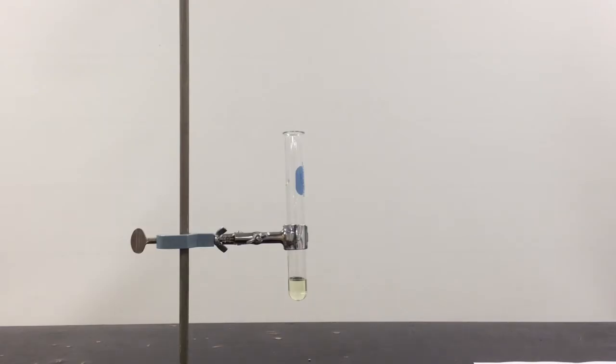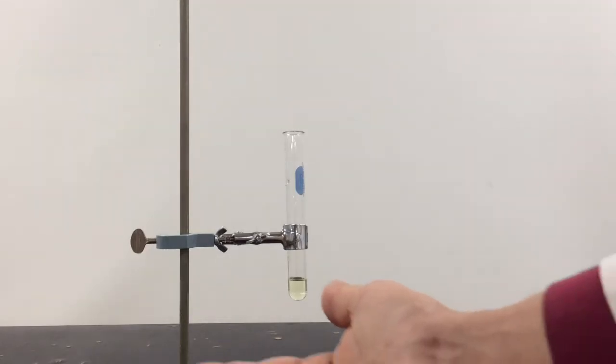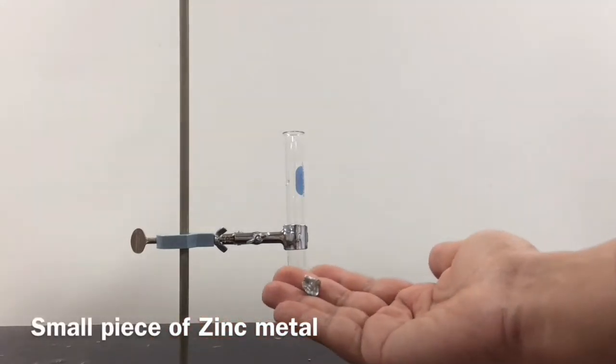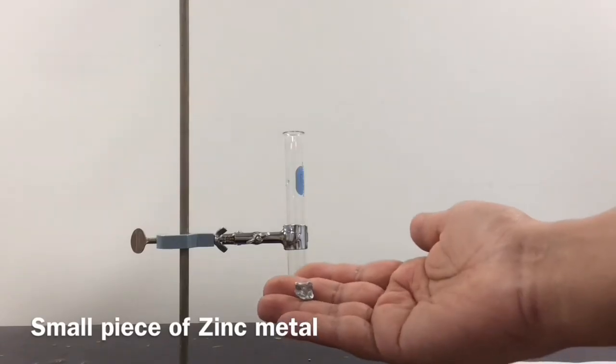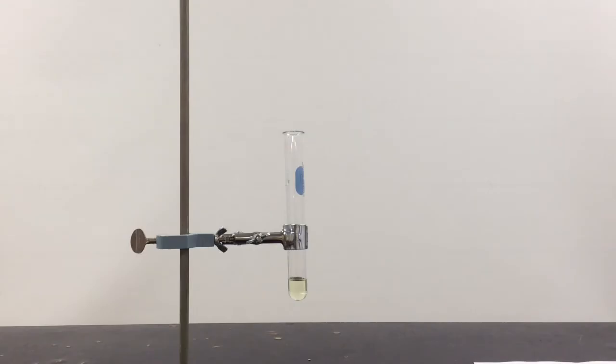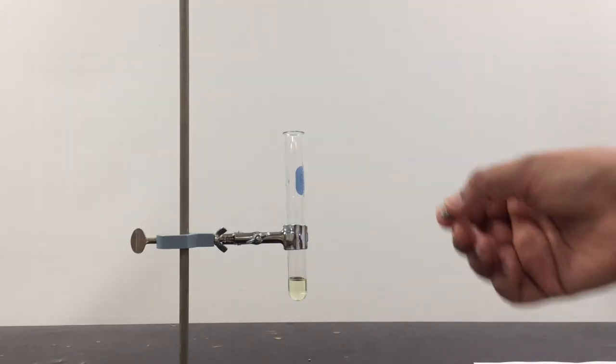Then, I'm going to take a little piece of zinc metal. I have this zinc metal in my hand here, as you can see. It's pretty shiny, just like most metals are, kind of silvery in color. And I'm going to drop the zinc into the acid.